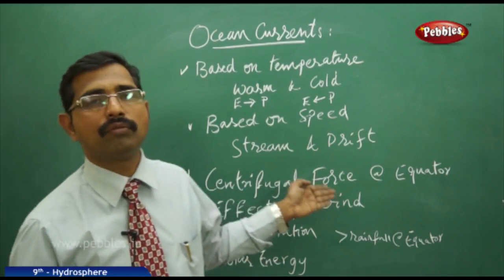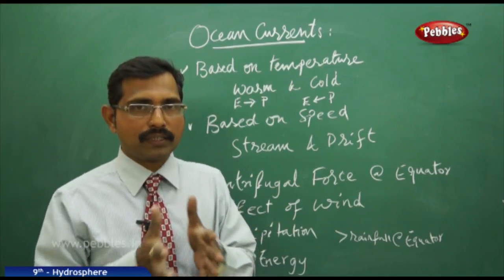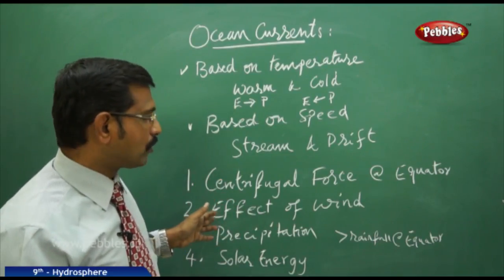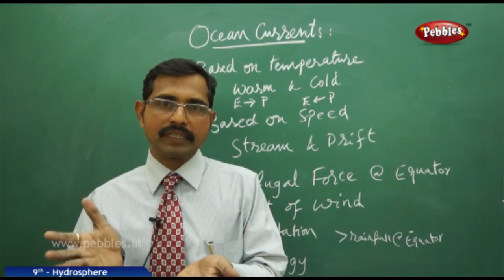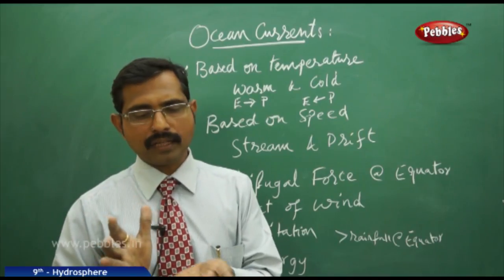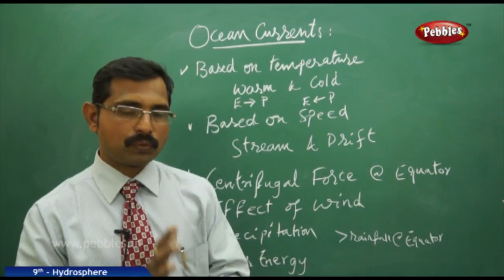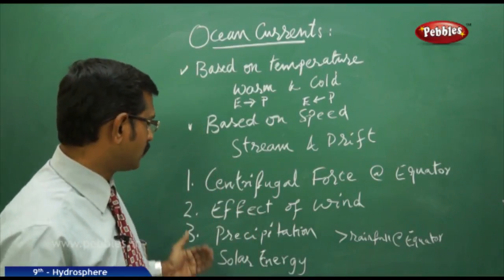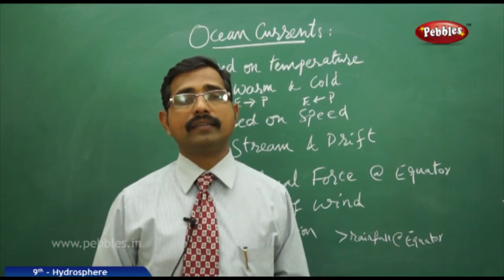Ocean currents are mainly influenced by several factors. Centrifugal force at the equator is higher compared to the polar region, which affects ocean currents. Wind flow also affects ocean currents — for example, if wind moves at 50 miles per hour, the surface water current will move at about 0.75 miles per hour.